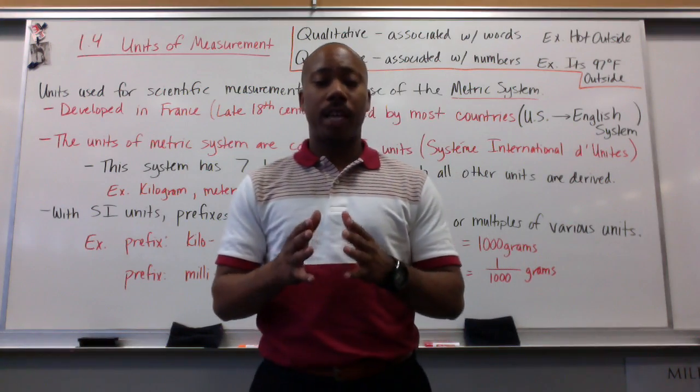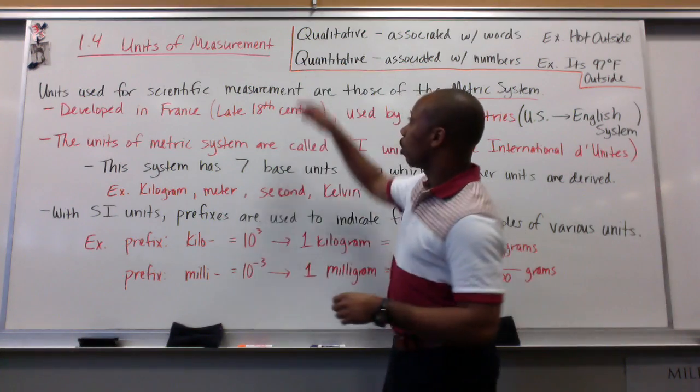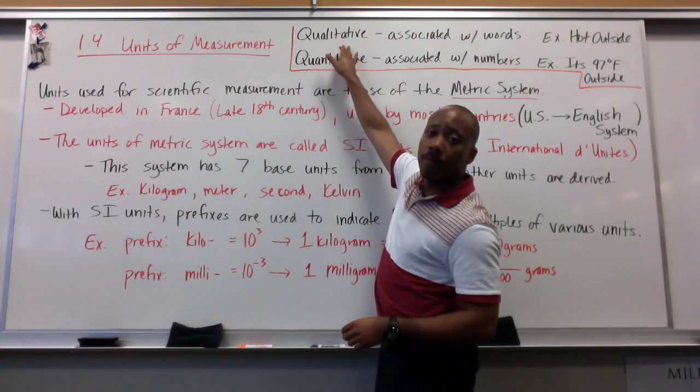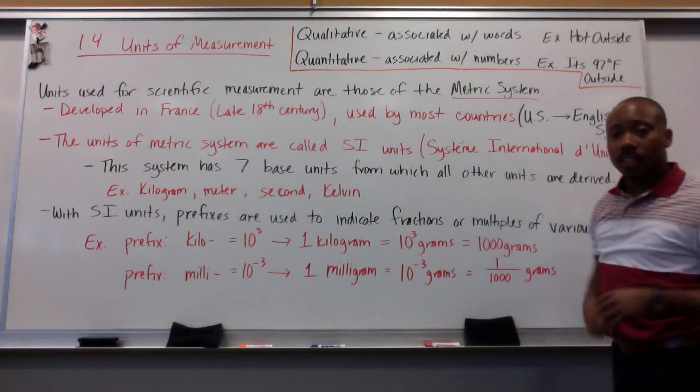Now, there are two major types of scientific measurement. The first type is called qualitative. So, qualitative measurements are associated with words. For example, if I were to say, it's hot outside.